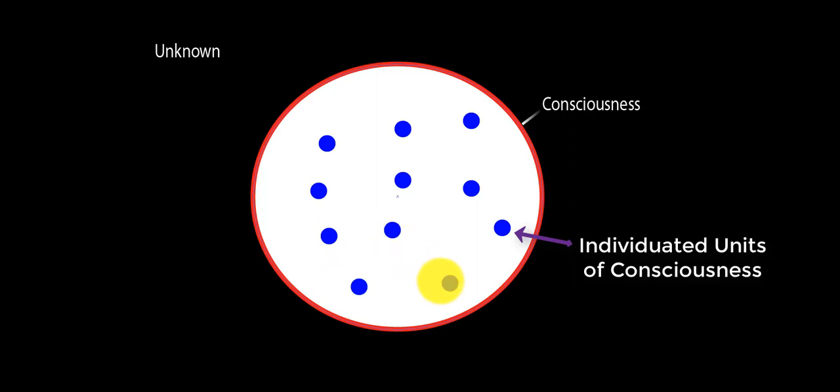So what these are referred to would be individuated units of consciousness. Each one of these is an independent, free-thinking chunk of consciousness. So you have all these contained within the larger consciousness system. That's what is everything within consciousness.